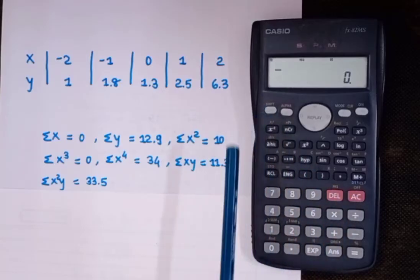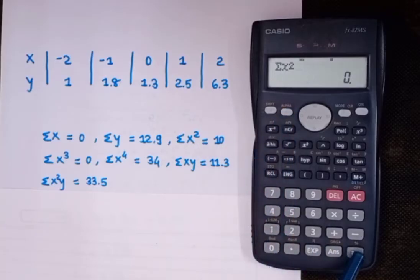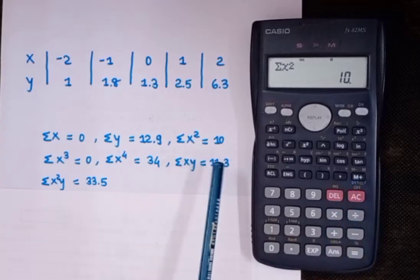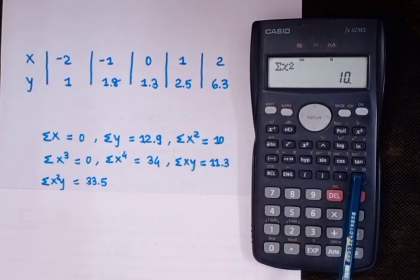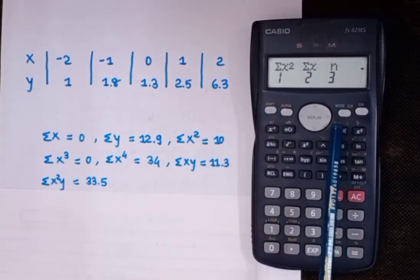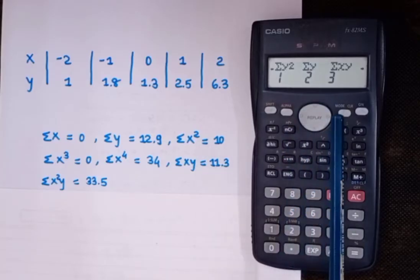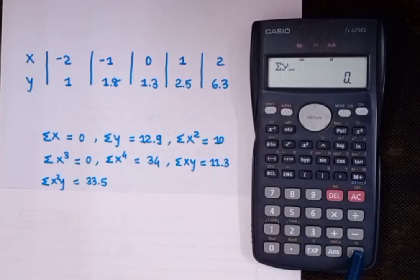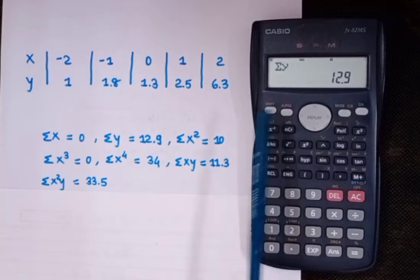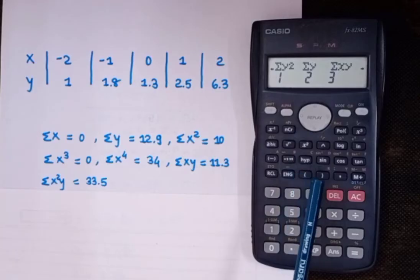Then again press Shift, S-sum (1), then press 1 for Sigma X² and press equals — you're getting 10. Then press S-sum, click next, and find Sigma Y: press 2 then equals — we're getting 12.9.